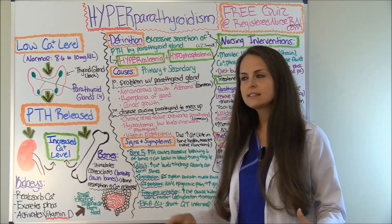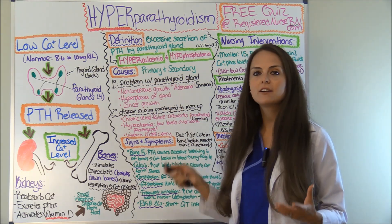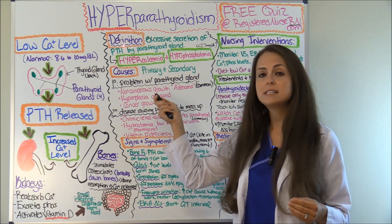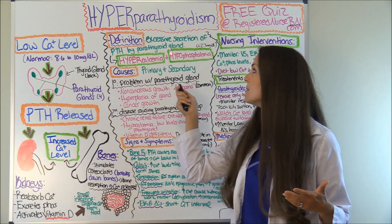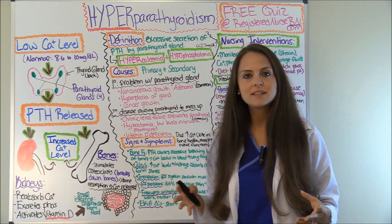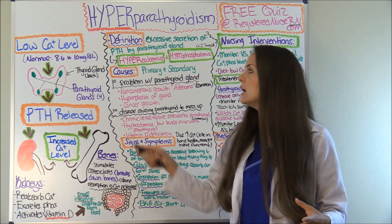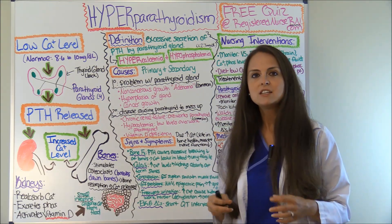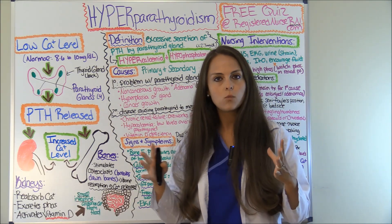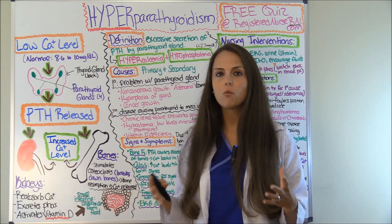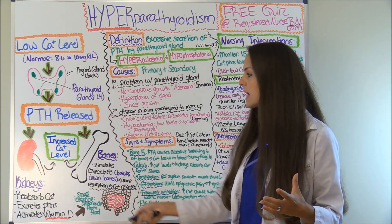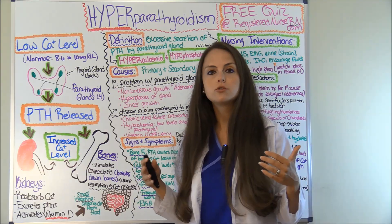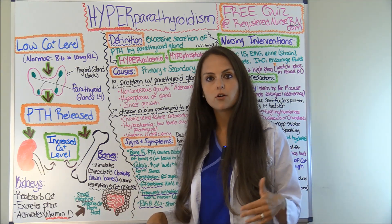Let's start with the definition of hyperparathyroidism. It is an excessive secretion of PTH — parathyroid hormone — by the parathyroid gland. Whenever this happens, the patient will present clinically with hypercalcemia and hypophosphatemia. So why are they presenting with a high calcium and a low phosphate level? Let's look at the negative feedback loop of how the parathyroid works to regulate calcium levels along with phosphate levels.